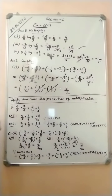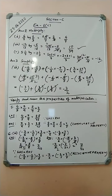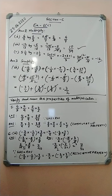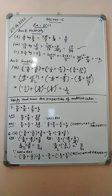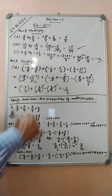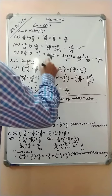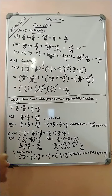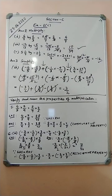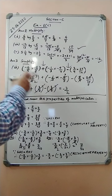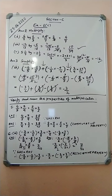Now question number three: simplify. Part number two has three brackets. The first bracket: minus four by five, multiplied by fifteen by eight. The second bracket: minus one by three, multiplied by minus nine by seven. The third bracket: two by nine, multiplied by twenty-seven by fourteen. Note the signs between the brackets — positive and negative.